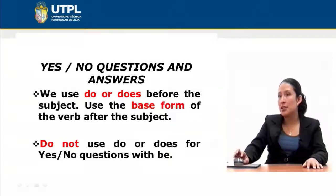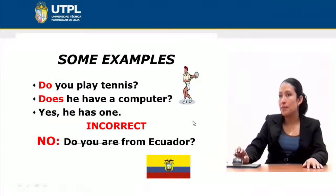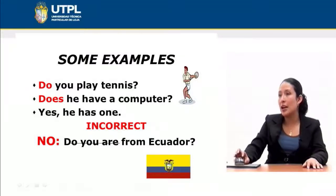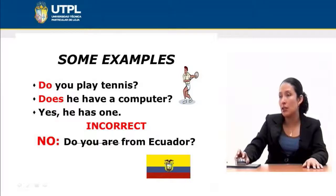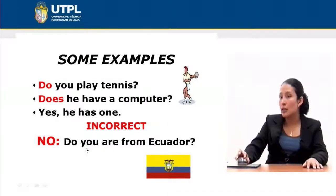We use 'do' or 'does' before the subject, and we use the base form of the verb after the subject. Do not use 'do' or 'does' for yes/no questions with the verb 'be'. Notice the following examples: 'Do you play tennis?' — here we use 'do' because we are talking about 'you', which is the second person. 'Does he have a computer?' — here we use 'does' because the third person is 'he'; you could also use 'she' or 'it' instead.